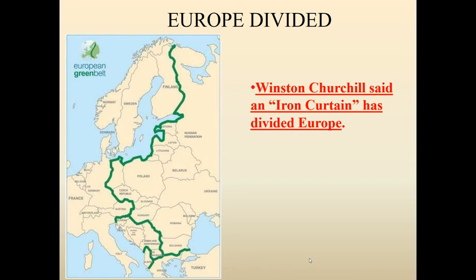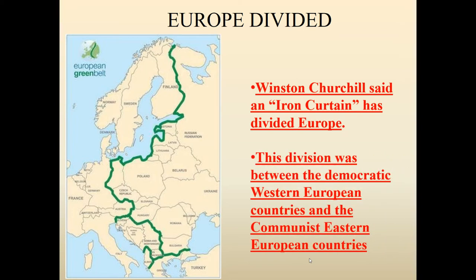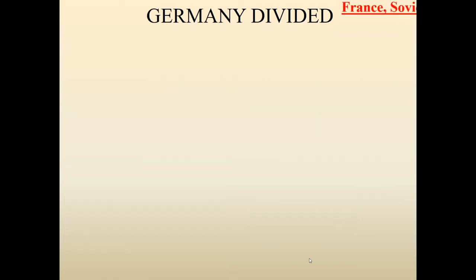The fact that he used this metaphor 'iron' shows that this curtain isn't going to be broken down anytime soon. It's heavy, it's permanent, and we're not going to see Europe basically get over its differences anytime soon. So this division between the West and the East — we definitely start using the phrasing West and East: West to symbolize the democratic capitalist countries allied with the United States, and East to symbolize the communist countries allied with the USSR. With this prediction, we actually saw it get permanent with Germany.